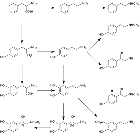Catecholamines are produced mainly by the chromaffin cells of the adrenal medulla and the post-ganglionic fibers of the sympathetic nervous system. Dopamine, which acts as a neurotransmitter in the central nervous system, is largely produced in neuronal cell bodies in two areas of the brain stem: the ventral tegmental area and the substantia nigra, the latter of which contains neuromelanin-pigmented neurons.